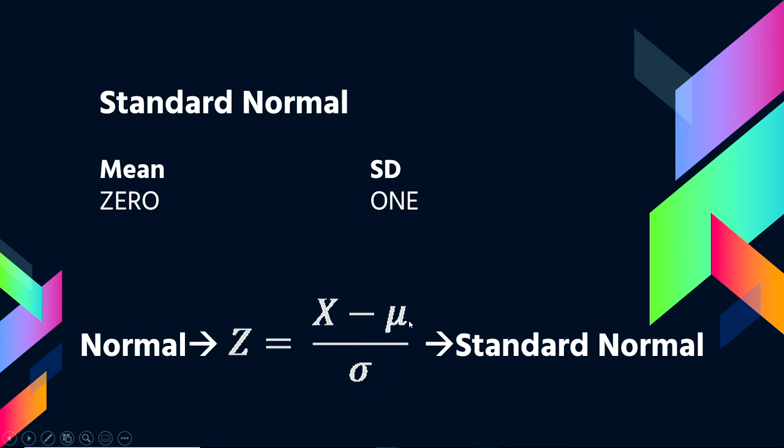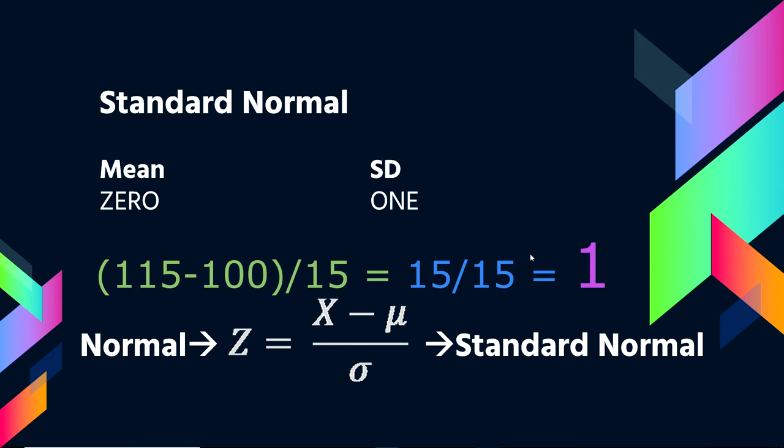So if, for example, the mean was 100 and x was 115, then you would get 115 minus 100 equals 15. That's the raw unit deviation from the mean. This score was 15 points above average. But if the standard deviation was also 15, then you would take that 15 and divide by 15. And what that now tells you is that this x-score was one standard deviation above average.